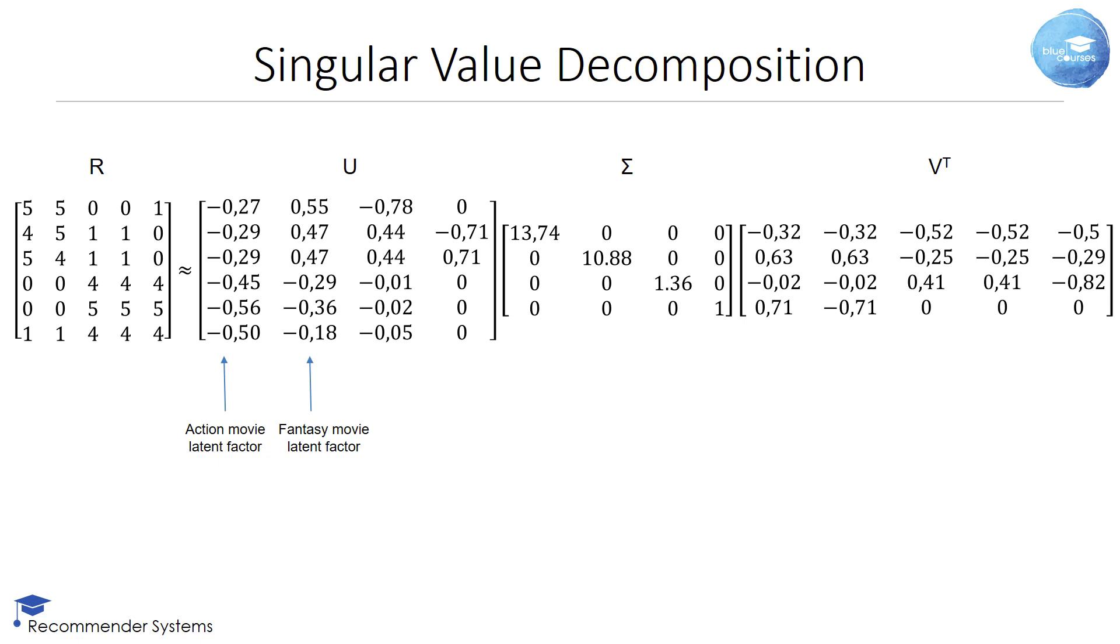Let's look at the first two columns of the U matrix. In the first column, you can see the distinction between the first three values and the last three. Essentially, this models the action movie latent factor, liked by Bart, Michael, and Tim.